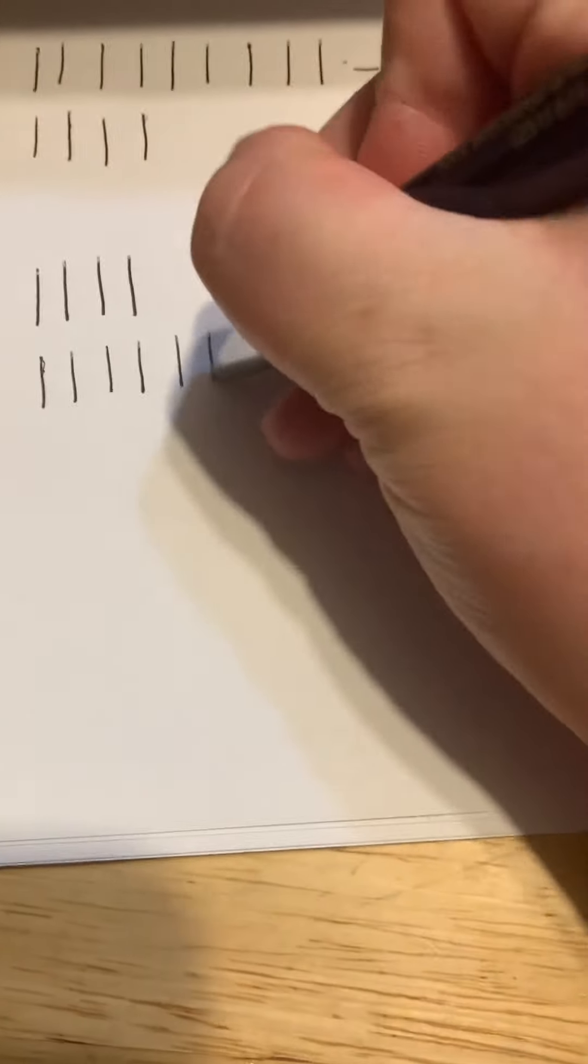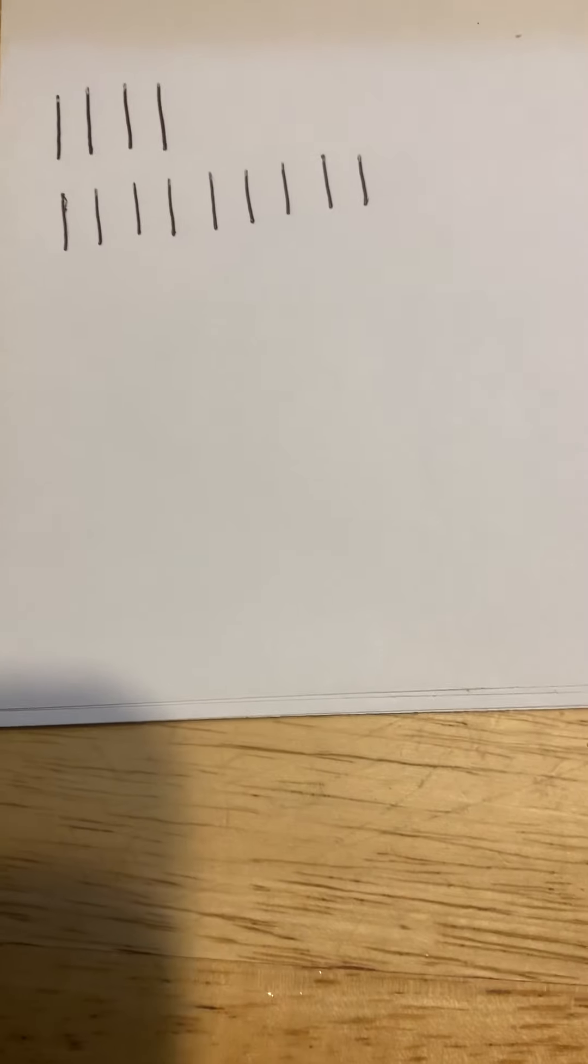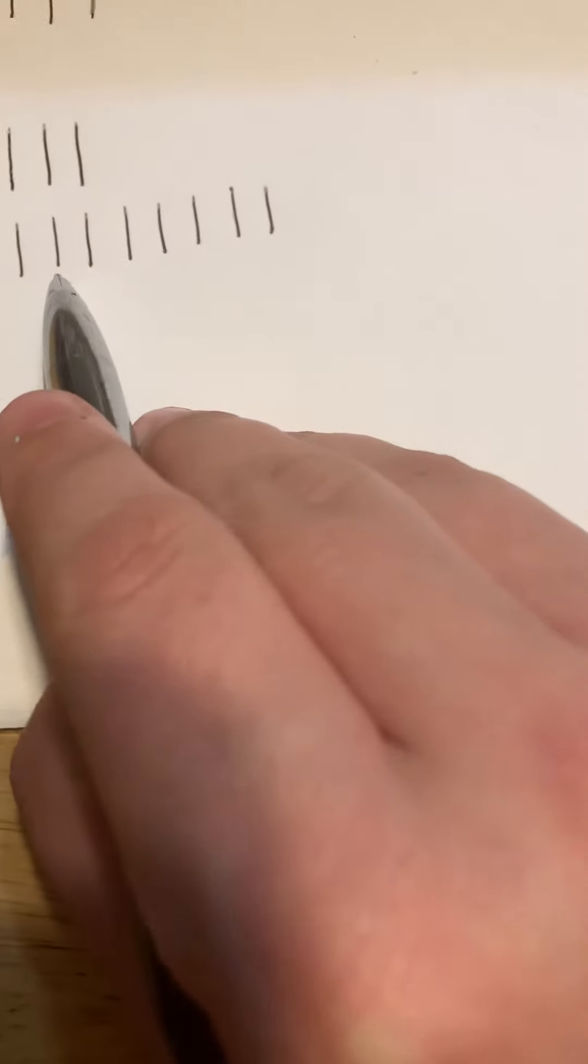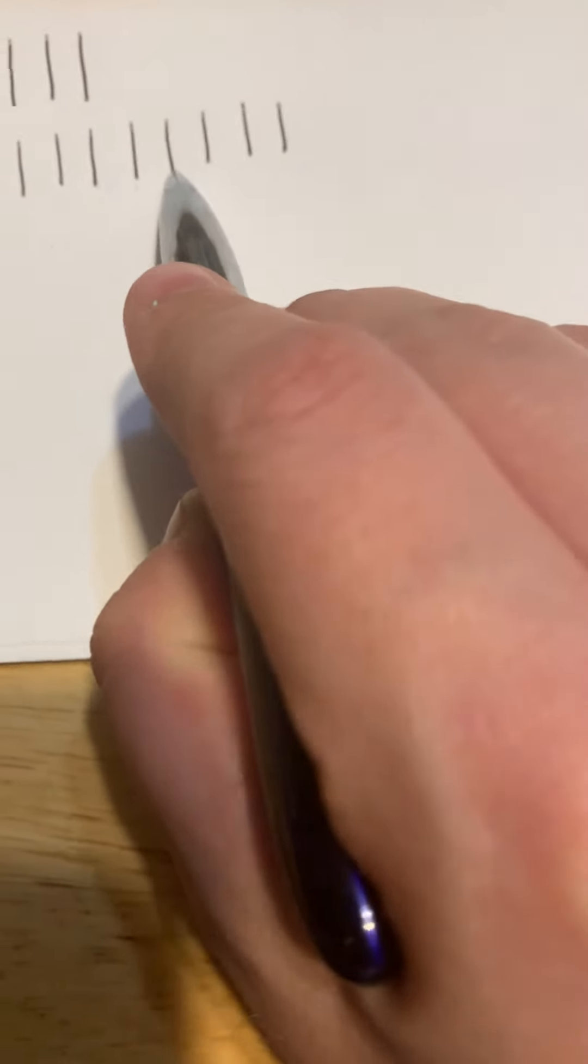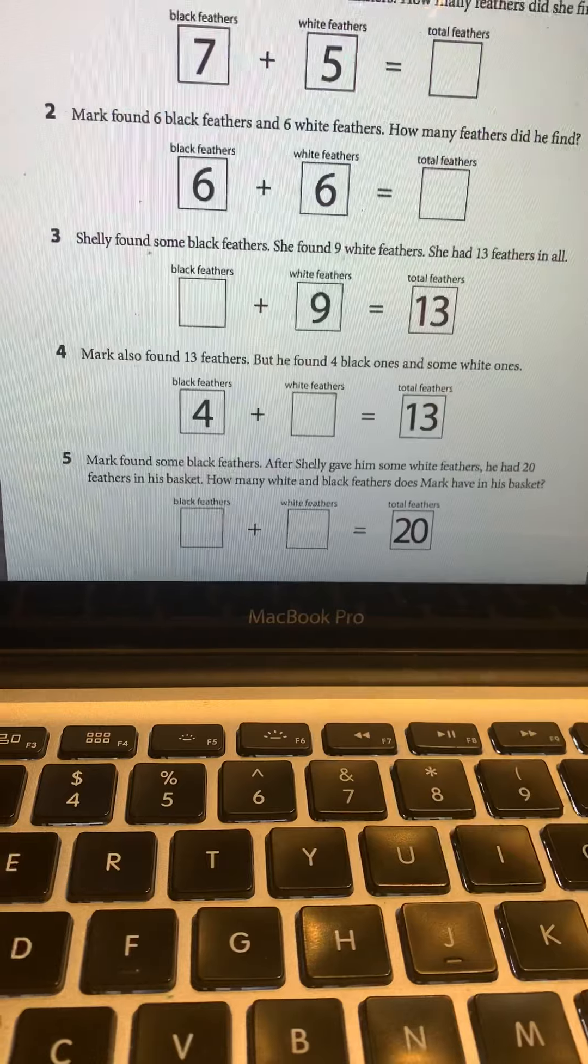Okay. So you should have four tally marks. We're going to count on until we get to 13. Four, five, six, seven, eight, nine, 10, 11, 12, 13. All right. I reached the number 13. Let's see how many we added. One, two, three, four, five, six, seven, eight, nine. So four plus nine equals 13.